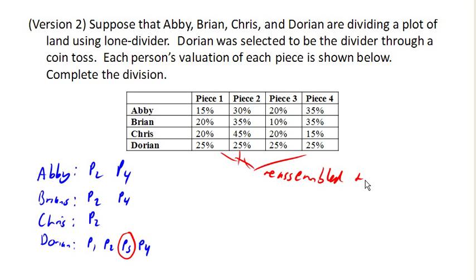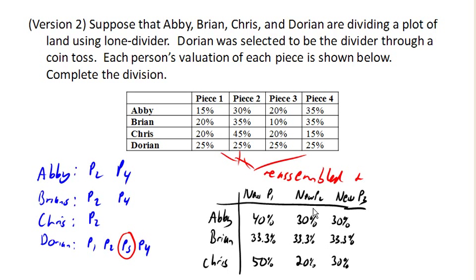And so we need to know what the resulting values look like then. So here's their valuations for the new division. Again, the idea here is that originally, Dorian had divided the land up into, let's say, four pieces.